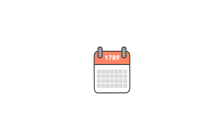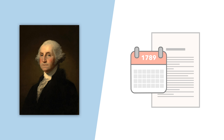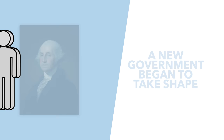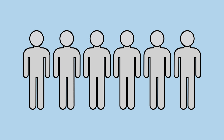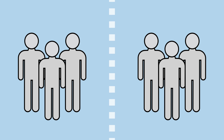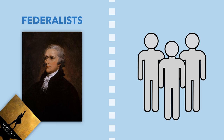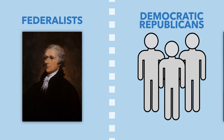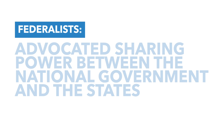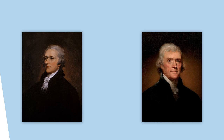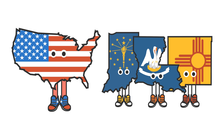Before we get into the actual parties, a little bit of background. In 1789, the new US Constitution had just been ratified. George Washington assumed the presidency, and the new government began to take shape. Not long after, political parties began to form along ideological lines. As the new government was based on the idea of federalism — that is, sharing power between the national government and the states — these factions developed around the concept of government power, and where that power should reside: whether the federal government or state government should have more power.